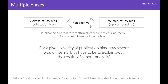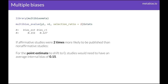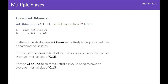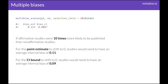This lets us ask a parallel question: for a given severity of publication bias — a certain selection ratio — how severe would internal bias have to be on average across studies to shift the point estimate to the null or to some other value? The multi-bias meta package lets you conduct this analysis. For a given selection ratio, for example 2, this is the bias that would have to be present for the estimate and the confidence interval bound to shift to 0, respectively. If we change the selection ratio to 10, the amount of bias required to shift the point estimate or CI bound to 0 changes accordingly.